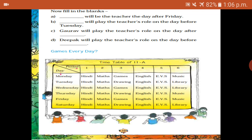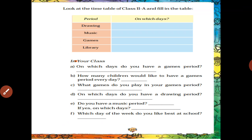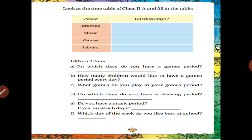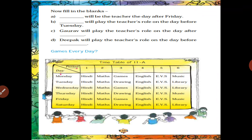Look at the timetable of class 2A and fill in the table. They are asking about drawing, music, games, and library. Drawing — when does it come? Tuesday. Music — when does it come? Monday is a music day, and any other day. Drawing also comes on Tuesday and Thursday.